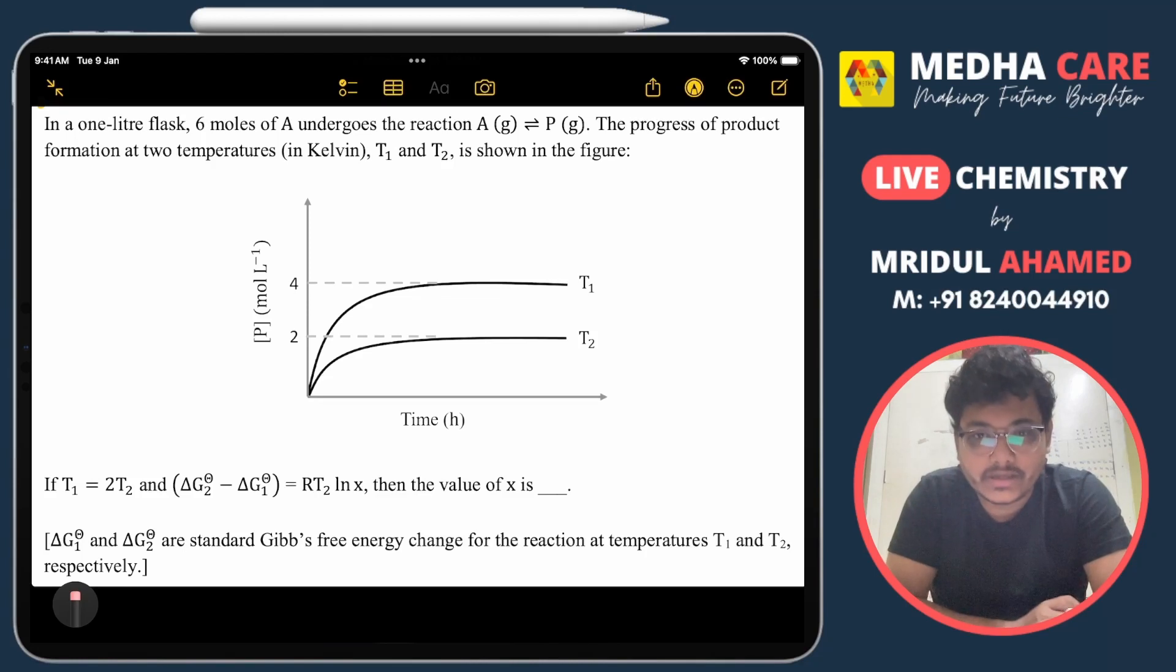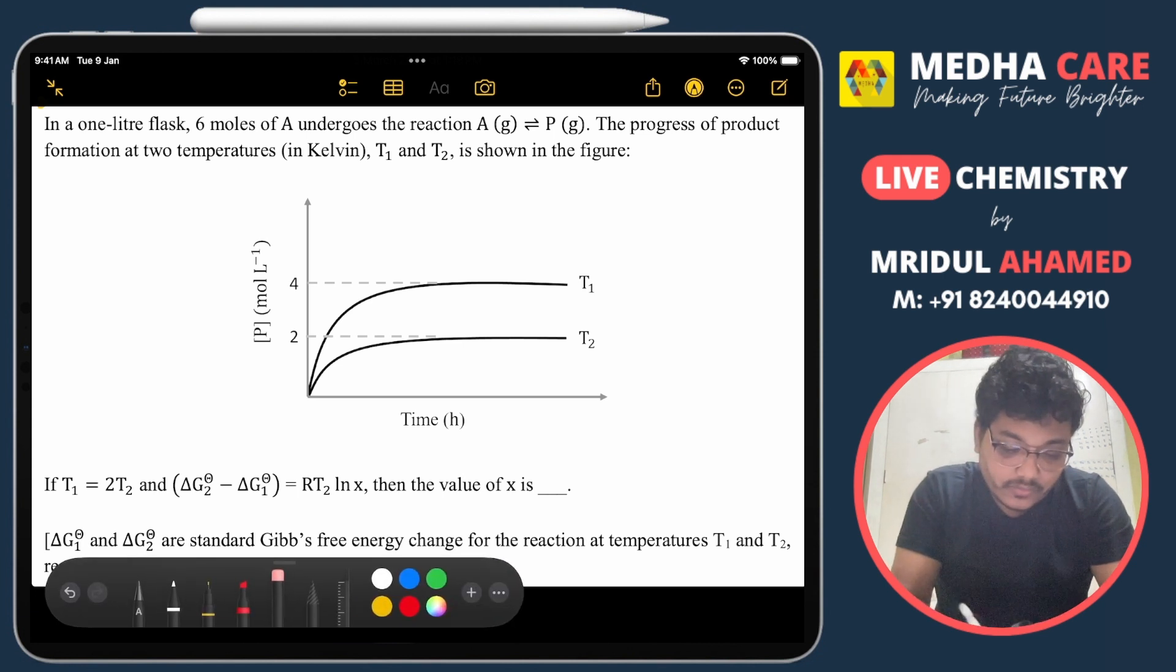Welcome everyone to Medha Care. Today we will discuss this question from JEE Advanced 2023. In this question, we have a one liter flask with six moles of A that undergoes equilibrium with product P, and we are getting two equilibrium conditions.